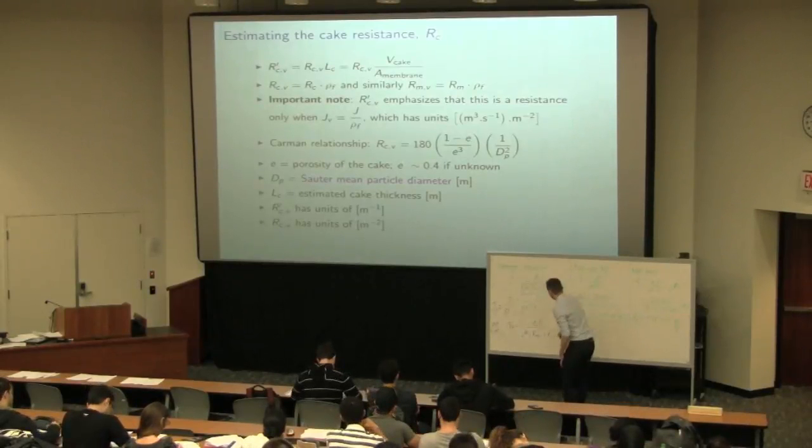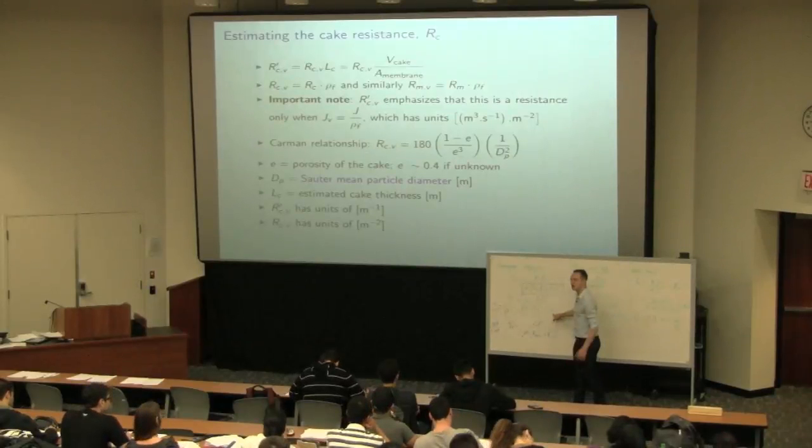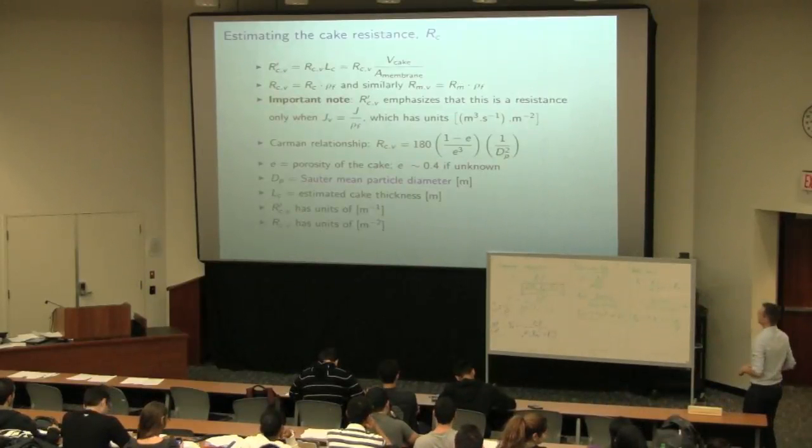So for this correlation, you're going to require that RCV, it's the equivalent of the original RC that we had, just multiplied by the permeate's density. So that's what those first two lines are about.